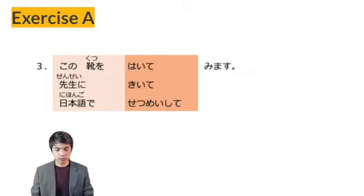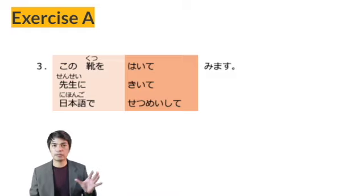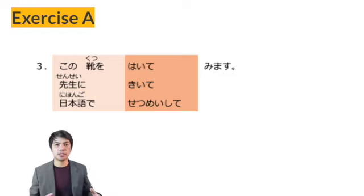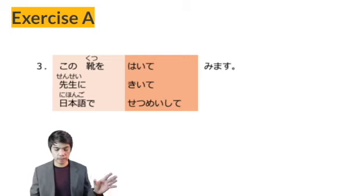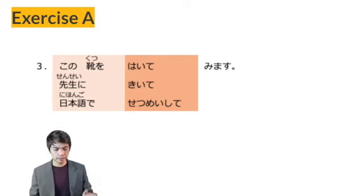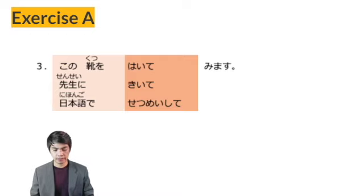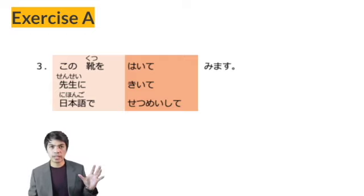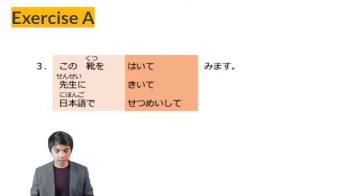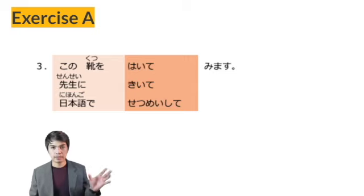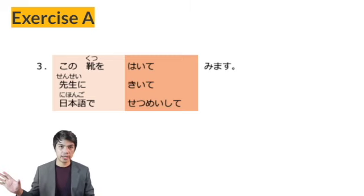Number 3: Kono kutsu haite mimasu. The verb TE MIMASU means 'try to do the verb.' From HAKIMASU — to put on shoes, slippers, or anything on your foot — the TE form is HAITE plus MIMASU — I will try to put on these shoes. Sensei ni kite mimasu — from KIKIMASU, 'to ask' — I will try to ask the sensei. Nihongo de setsumei shite mimasu — from SETSUMEI SHIMASU, 'to explain' — I will try to explain in Japanese.